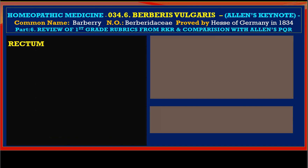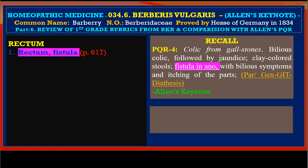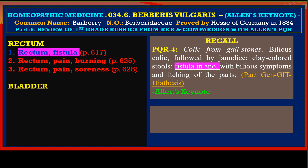Next is the rectum. In the rectum we find rectum fistula as a first grade representation, and here in Allen's keynote PQR4, it tells about fistula in ano with bilious symptoms and itching of the parts. This is a good comparison — both ways we find the important symptom fistula in ano present. Rectum pain burning and rectum pain soreness are not readily given at this moment in Allen's keynote.